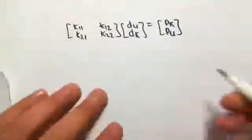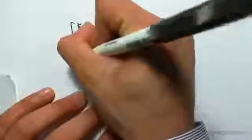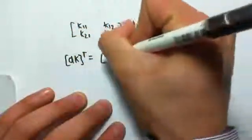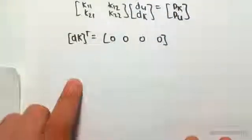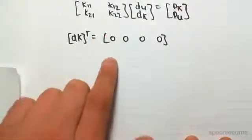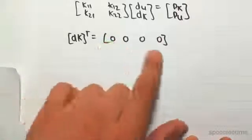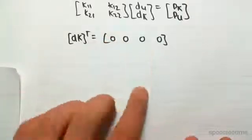So we could say that D known, and I'm going to call it transpose to write it out nicely, is 0, 0, 0, 0. The reason I've called it transpose is just to save a bit of paper. I could have written D known as a single column vector. I just want to write it out nicely like this in a row.